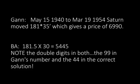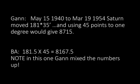Gann, May 15, 1940 to March 19, 1954 — Saturn moved 181 degrees, 35 minutes, which would give a price of 6,990. BA: 181.5 times 30 equals 5,445. Note the double digits in both — the 99 up here and the 44 here — which is a very important number. This isn't just random. And 4 plus 5 equals 9, 5 plus 4 equals 9. He's taking us into this kind of lightly. Of course, having read the book Tunnel Through the Air by Gann for 19 years and studied it really helps understand this. But let's continue on.